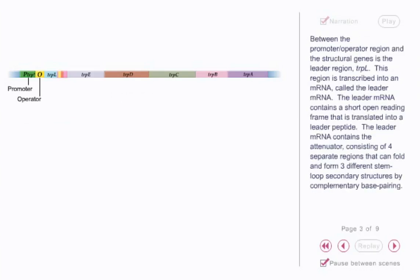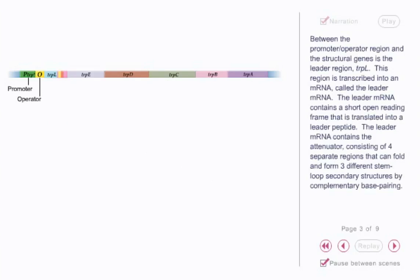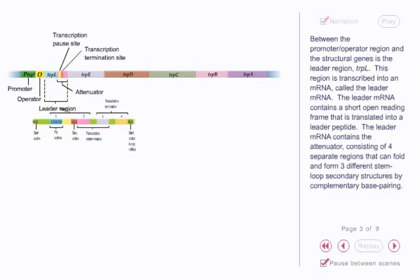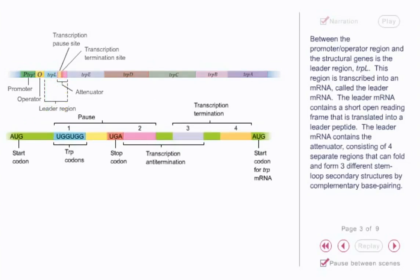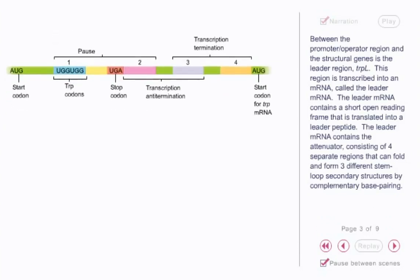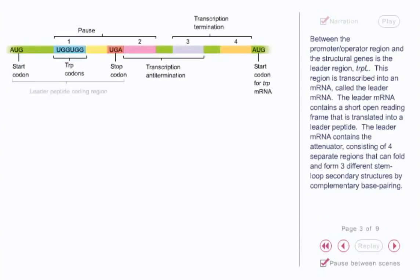Between the promoter-operator region and the structural genes is the leader region, trpL. This region is transcribed into an mRNA called the leader mRNA. The leader mRNA contains the attenuator consisting of four separate regions that can fold and form three different stem-loop secondary structures by complementary base pairing.